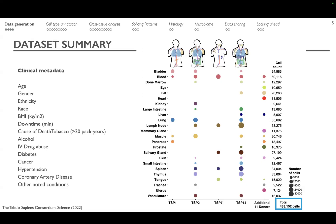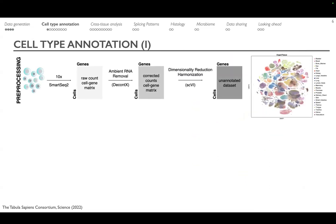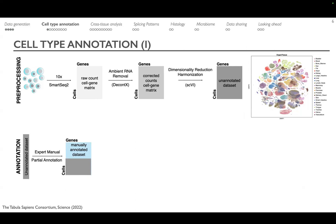The single most important step in this workflow is to annotate the data — to put labels on each dot in the UMAP. In Tabula Sapiens, we use a strategy that takes advantage of our network of tissue biology experts while also leveraging computational efforts that accelerate how annotations can be performed.